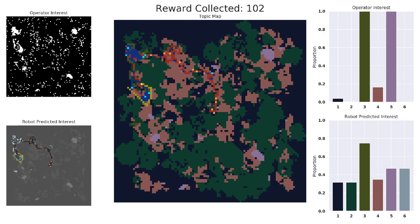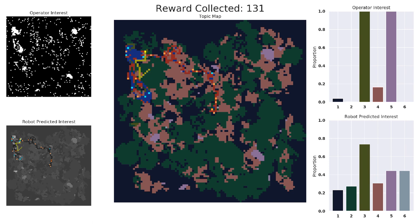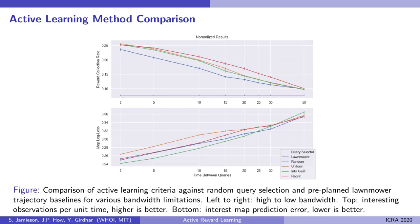To the top right is a randomly generated interest profile, which shows which topics a simulated operator is most interested in, and in the top left there is an interest map that shows where the interesting observations are. Below are the robot's corresponding predictions, based on the topic map and the observations it has labeled so far.